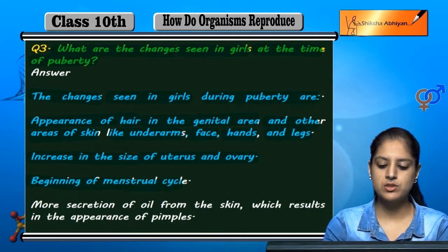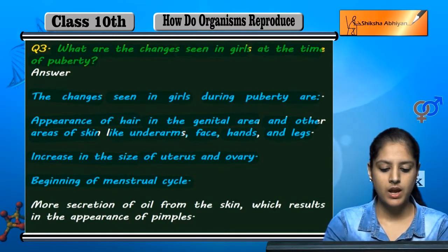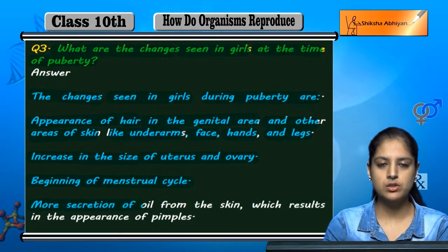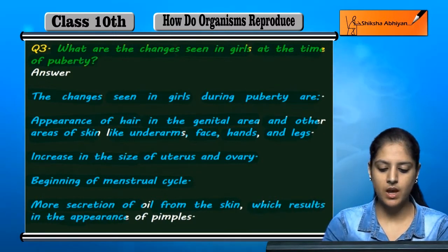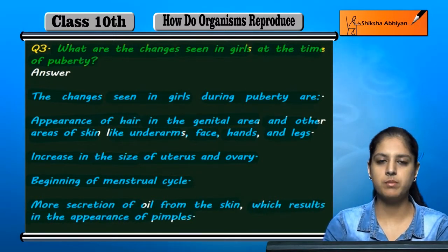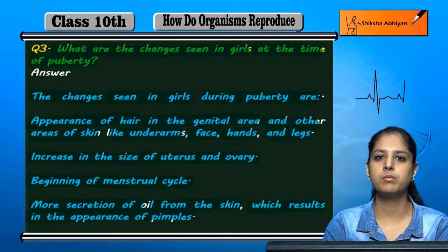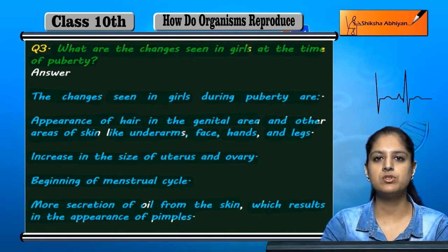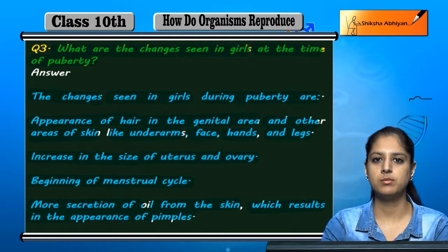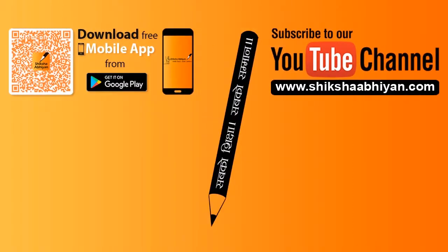Beginning of the menstrual cycle — the menstrual cycle starts. There is also more secretion of oil from the skin, which results in the appearance of pimples and acne. These are a few changes in girls during puberty.